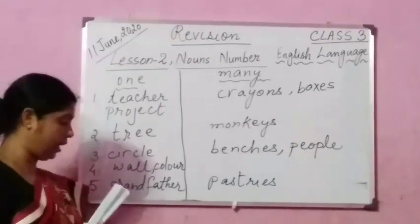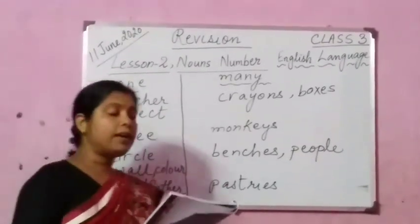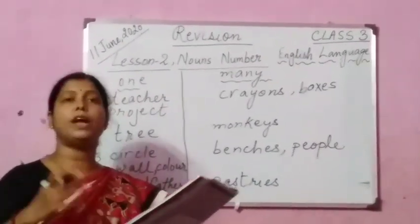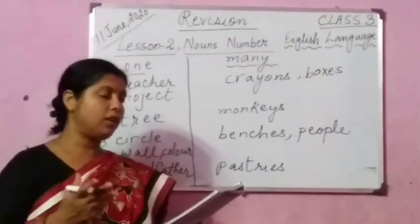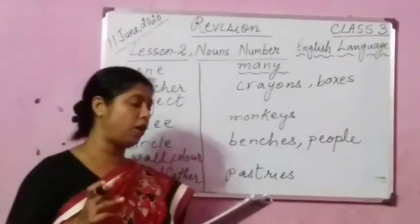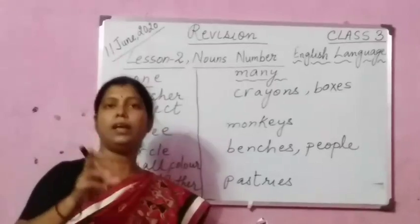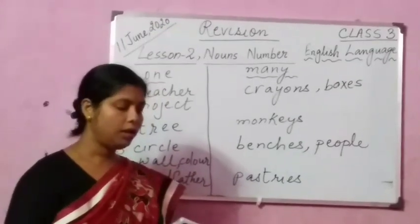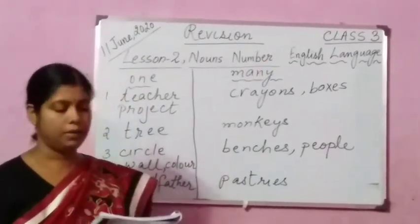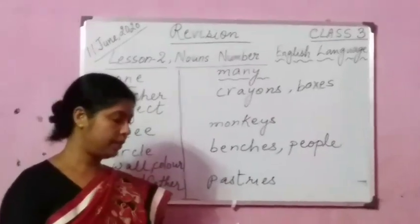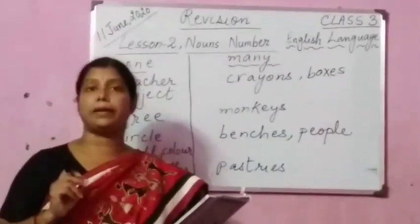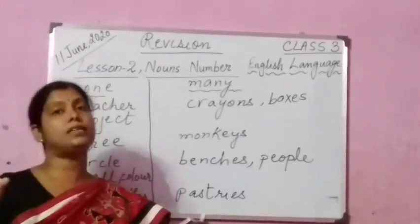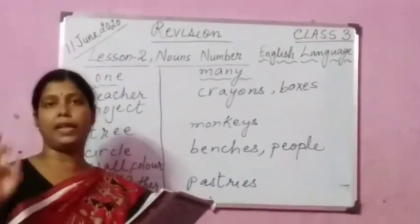Now we are going to revise Exercise A: write the correct plural forms to complete the sentence. We have learnt that singular nouns can be changed into plural forms by adding S, ES, IES, or VES. Number 1: the wolf is sleeping — the plural is the wolves are sleeping. The spelling is W-O-L-V-E-S.